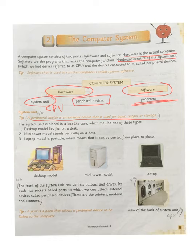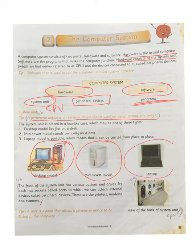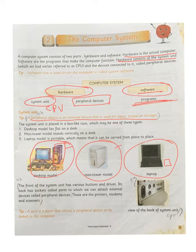The system unit is placed in a box-like case, which may be one of three types. First, the desktop model lies flat on a desk. Second, the mini tower model stands vertically on a desk. Third, the laptop model is portable — it can be carried from place to place. The desktop and mini tower need continuous power supply, but the laptop has a battery like a mobile phone.